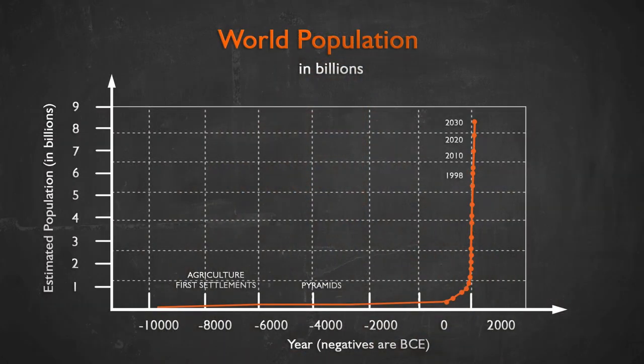If you look at a plot of the number of people on the planet as a function of time, you see a function that looks very much like what I just described. The number of people started out very small, rose over time, and now there are lots of people on earth. As you can see on this plot, eventually you might worry that all people can't survive because they get crowded or run out of food.